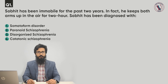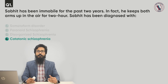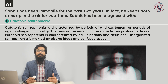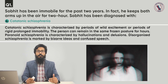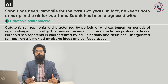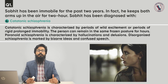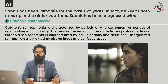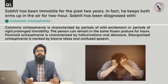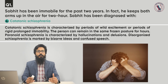The correct answer is catatonic schizophrenia, because catatonic schizophrenia is characterized by a period of wild excitement or a rigid prolonged immobility. The person can remain in the same frozen posture for hours. Paranoid schizophrenia is characterized by hallucination and delusion, and disorganized schizophrenia is marked by bizarre ideas and confused speech. That's why the correct answer is catatonic schizophrenia.